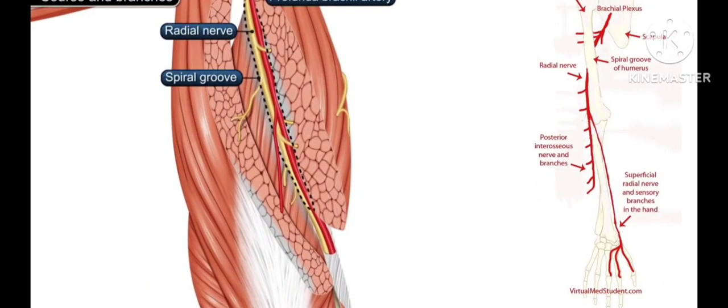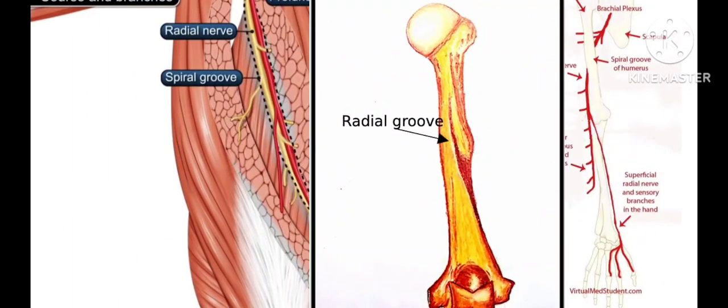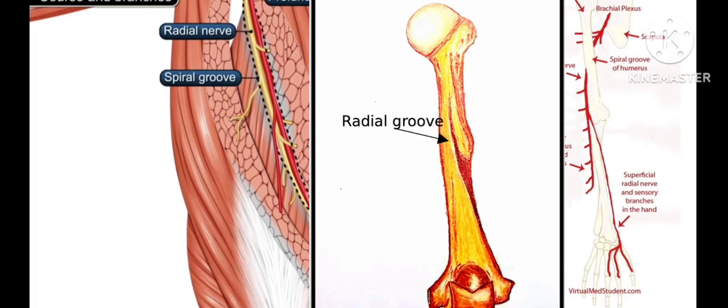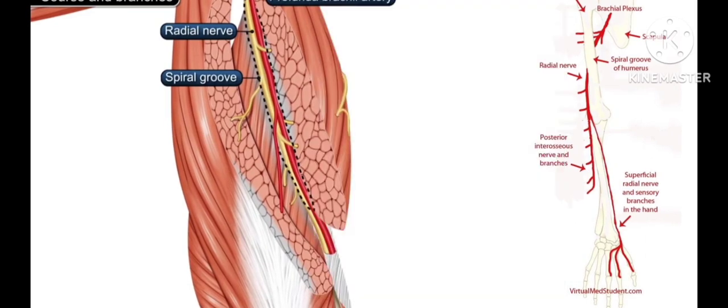After passing through the lower triangular space, the radial nerve enters the radial groove — also called the spiral groove — on the posterior surface of the humerus.